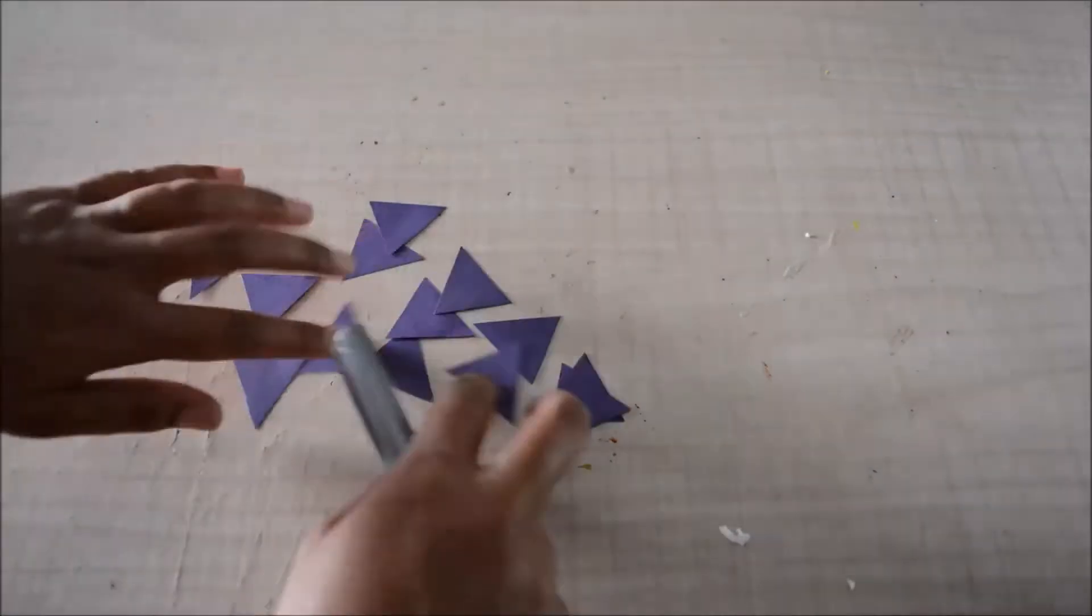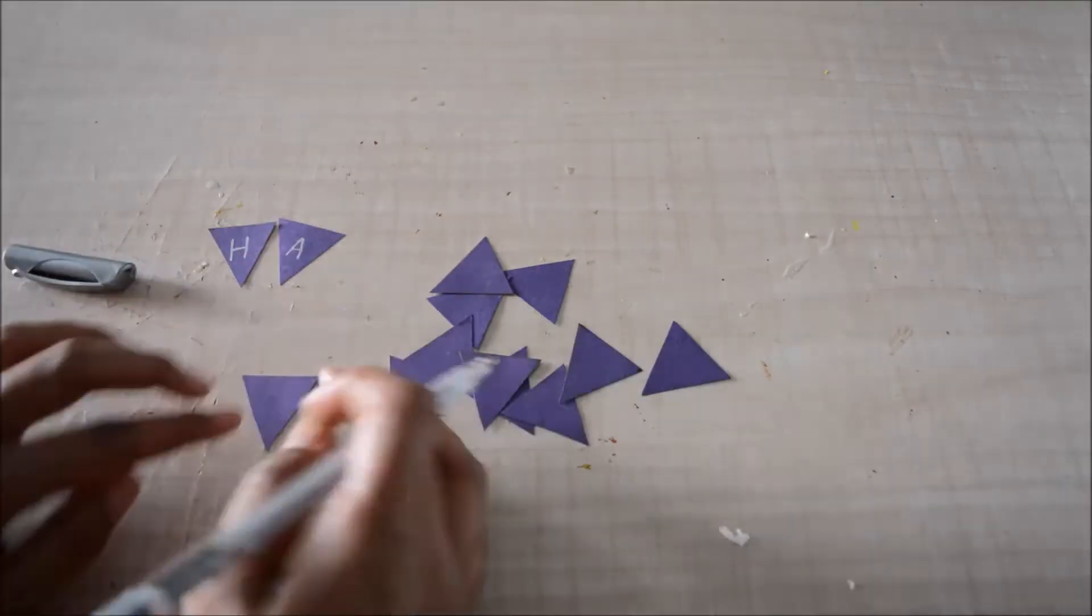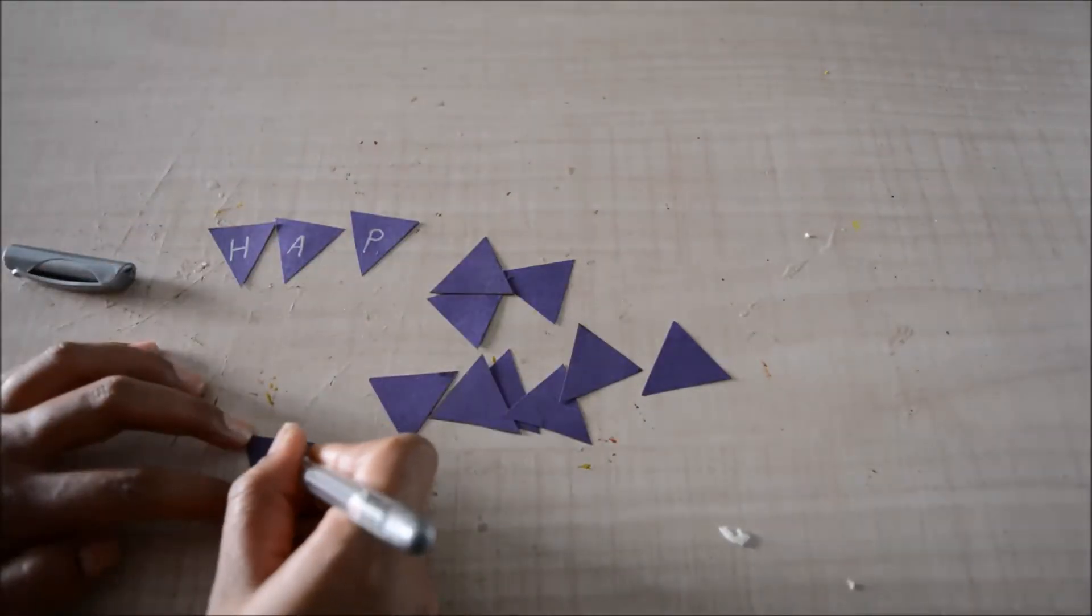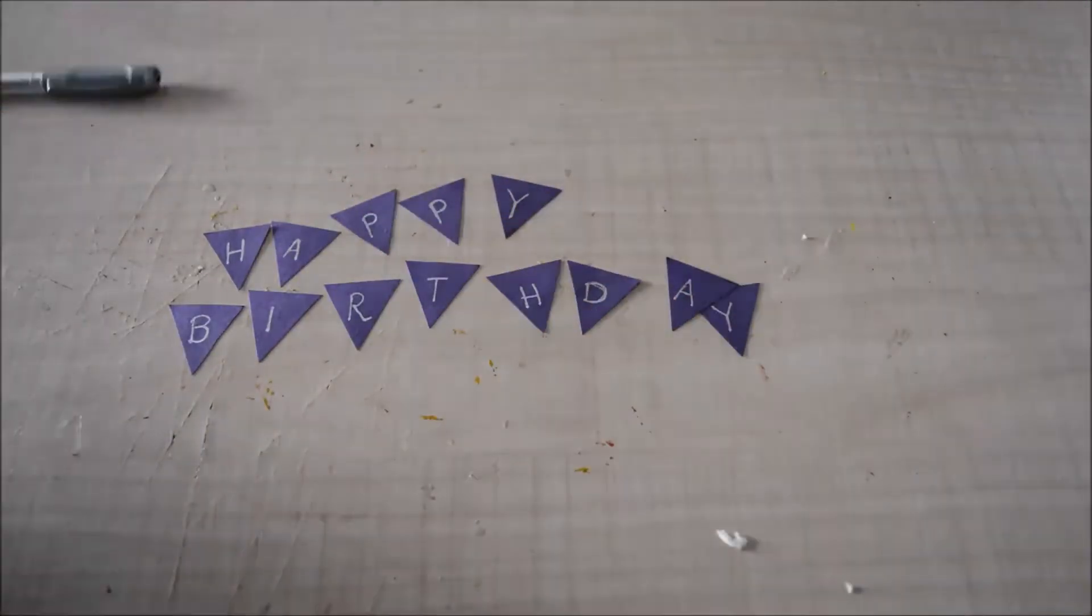Then I'll take my card and stick the white paper inside it. So while the glue on the card was drying, I cut these triangles and on each triangle I'll write one letter of the words happy birthday. So here are my letters, now I'll keep them aside and take my card.